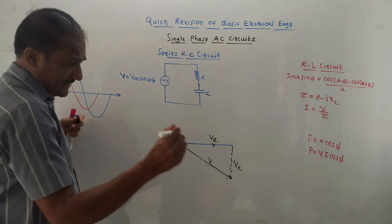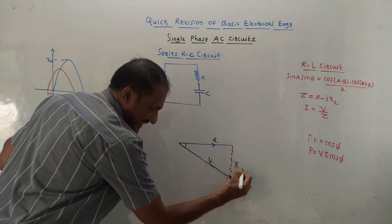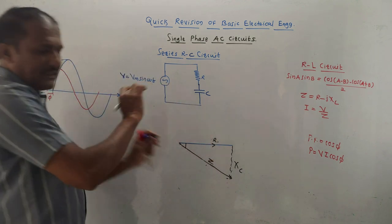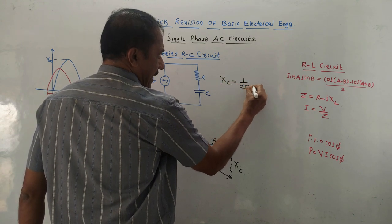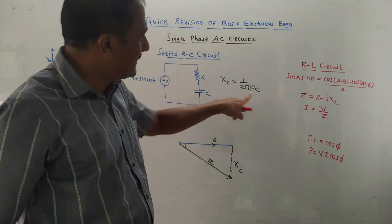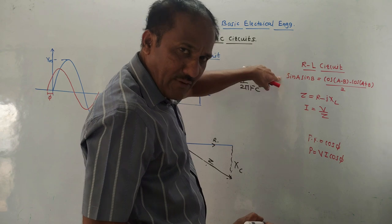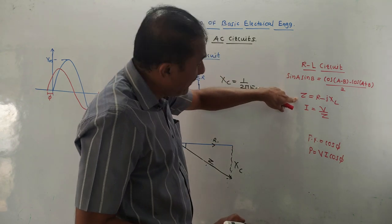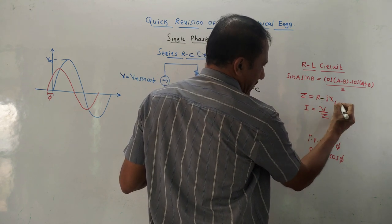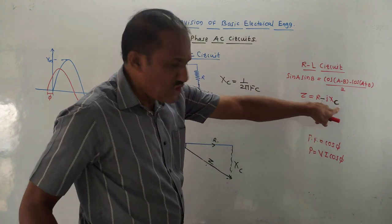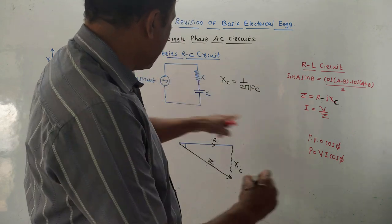For the impedance triangle: in place of Vr write R, in place of Vc write Xc, and in place of V write Z. Remember the formula: Xc = 1/(2πfc), where Xc is the reactance of capacitance and C is the value of capacitance. For the RC circuit, impedance becomes Z = R − jXc. Power factor and power formulae remain the same as for the RL circuit.